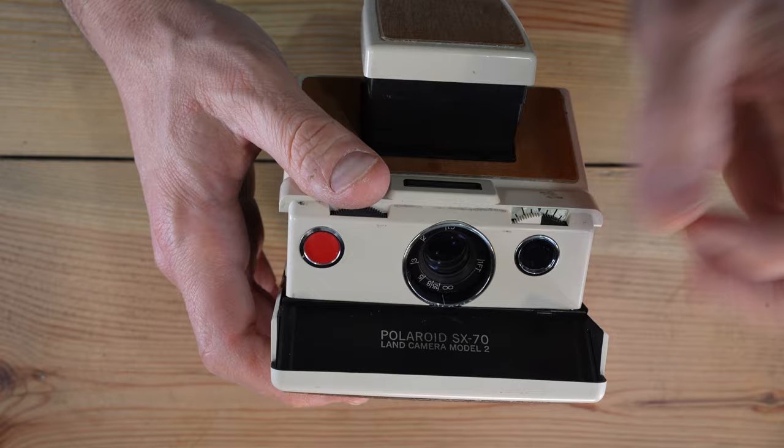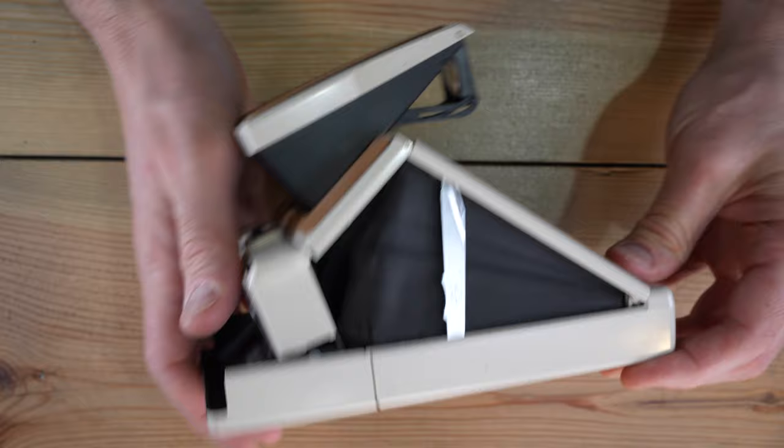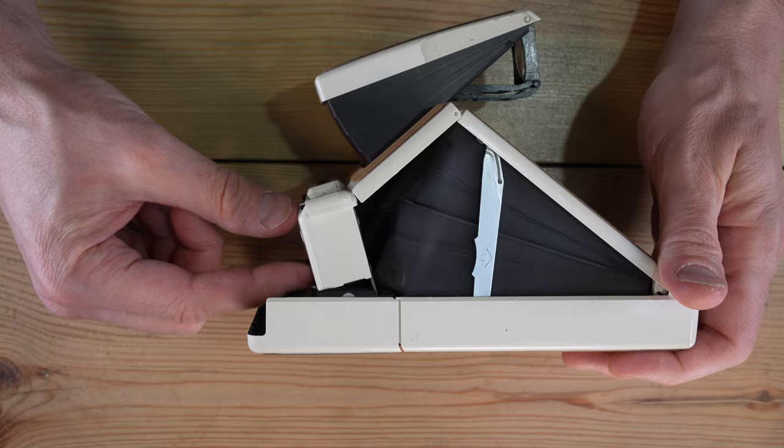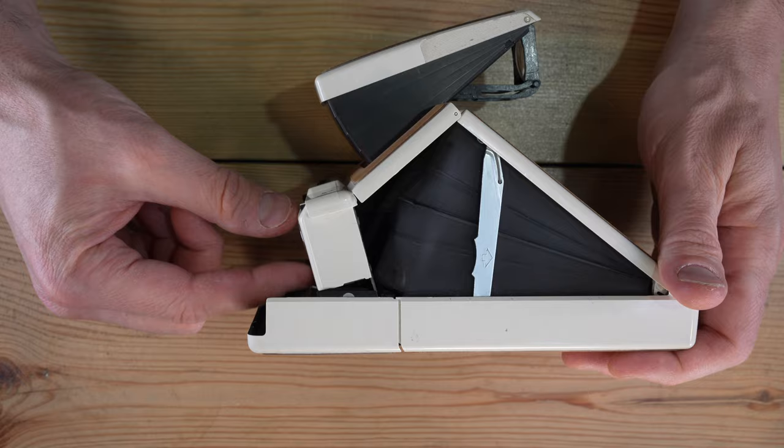It uses a shutter and iris combination in here. And what happens is that when you load the film, it's protected by a shutter that covers the film in here. And then when you go to take the picture, there's an iris in the lens and it closes.